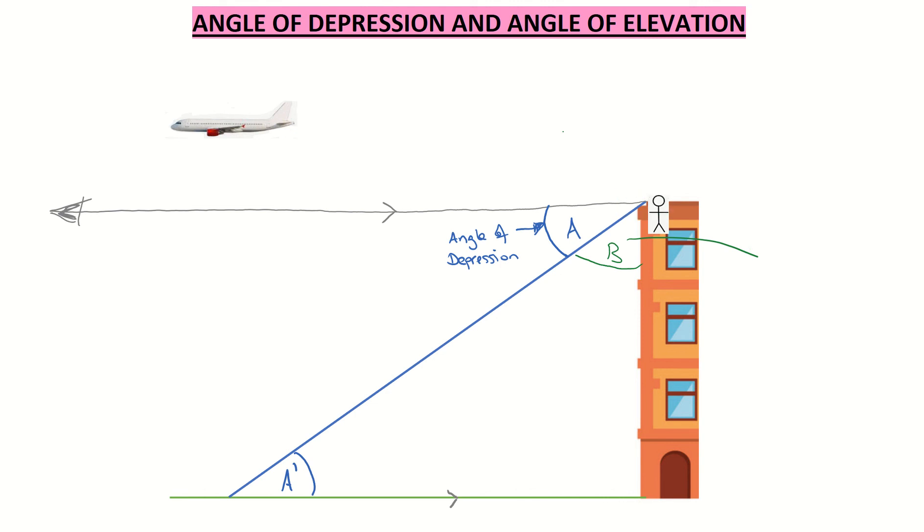So in order to get the size of B, I just go 90 degrees, subtract whatever the size of A was, and that will give me the size of B. So we can easily work out the size of the interior angles, and I'm assuming that the building here is creating a 90 degree angle.